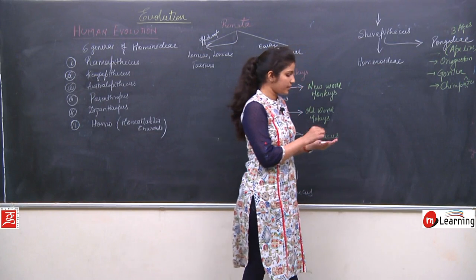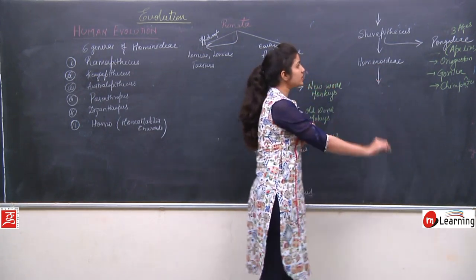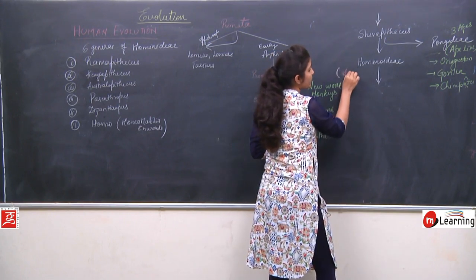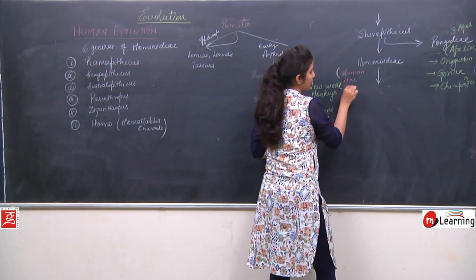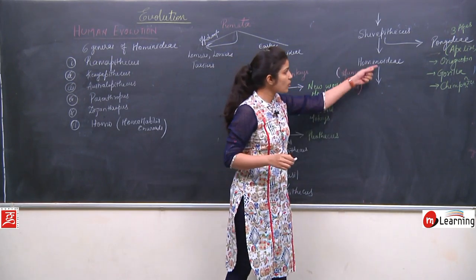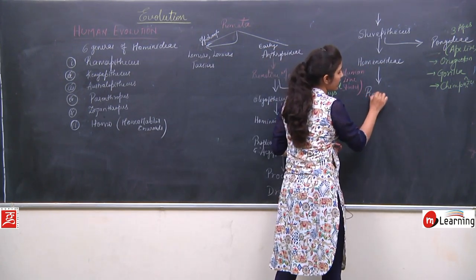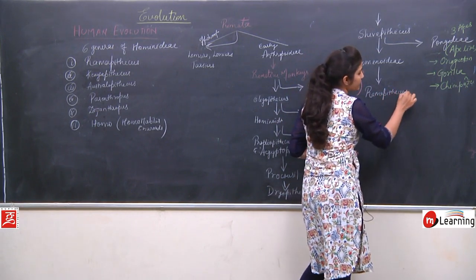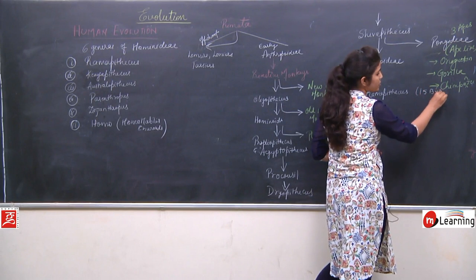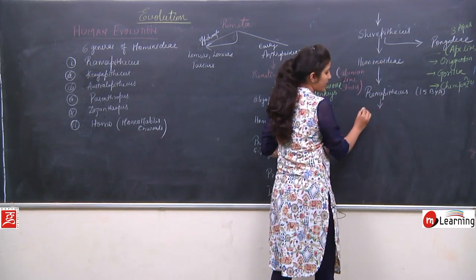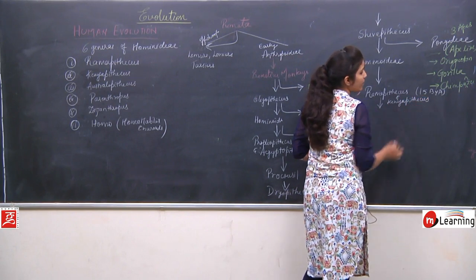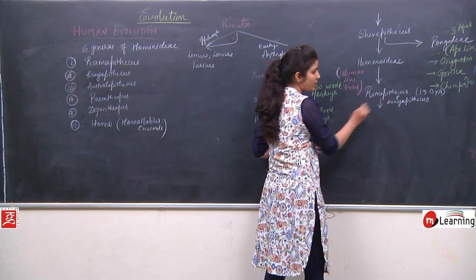From Hominoidi, the human line started. Hominoidi gives rise to Ramapithecus, from which the human line began. Ramapithecus and Keniapithecus both evolved at the same time, around 15 million years ago.